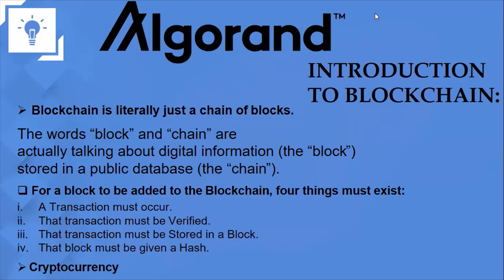There are four things that must exist before a block can be added to the blockchain. Blockchain is a chain of blocks — a connection of one block to the other. First, a transaction must occur. Before the transaction is executed, a block has to be placed just before the last block. That block must be verified by a group of miners following a particular consensus algorithm. The transaction is then stored in a block, and that block is given a hash. The hash is very unique — no two blocks will have the same hash.